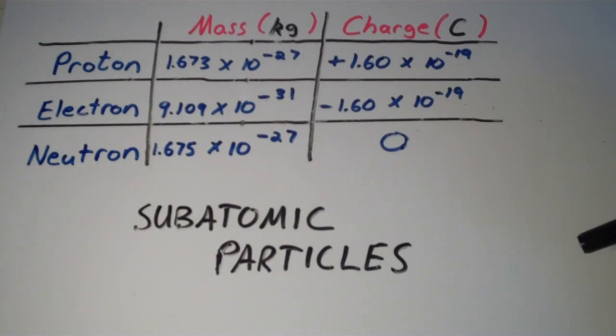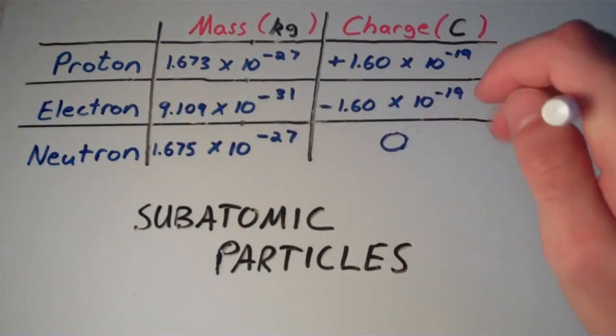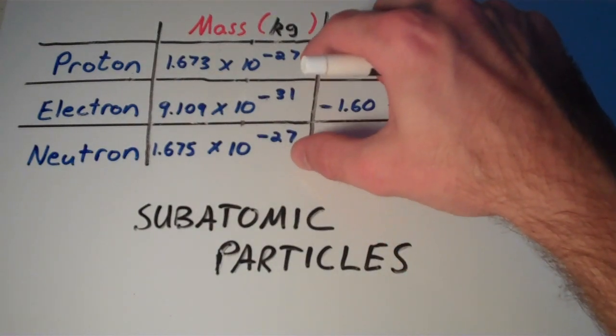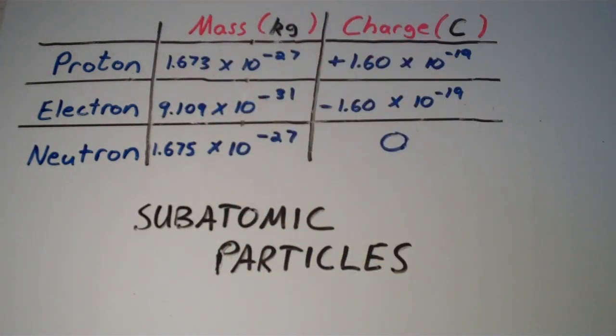And then moving on to the neutron, the neutron doesn't have any charge at all. But it has a mass that is about the same as the proton. Instead of 1.673 times 10 to the negative 27 kilograms, it is 1.675 times 10 to the negative 27 kilograms.